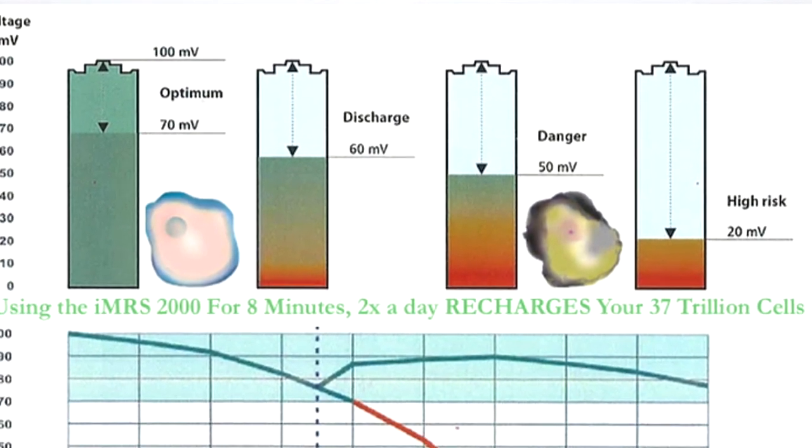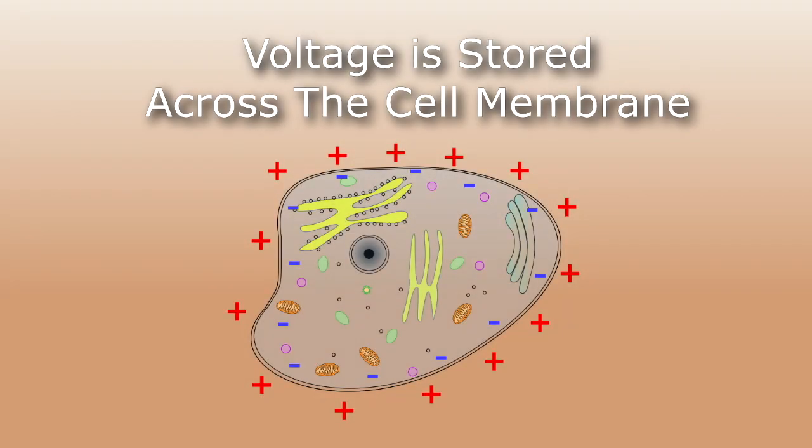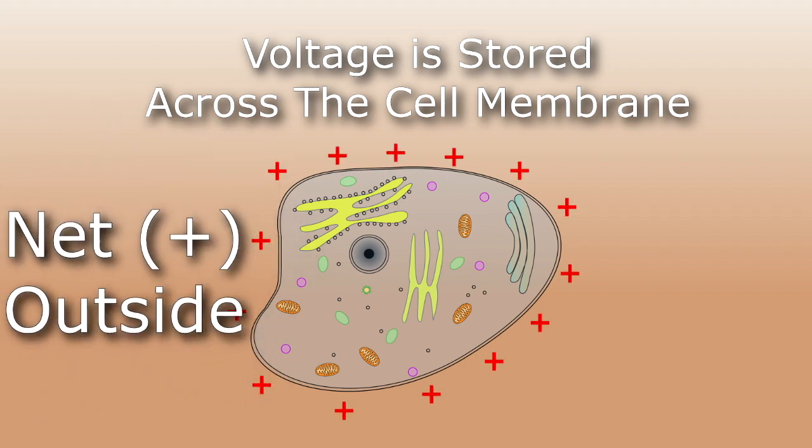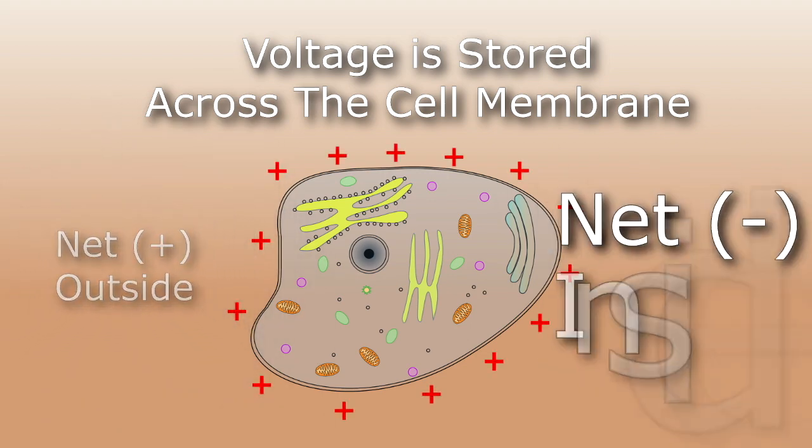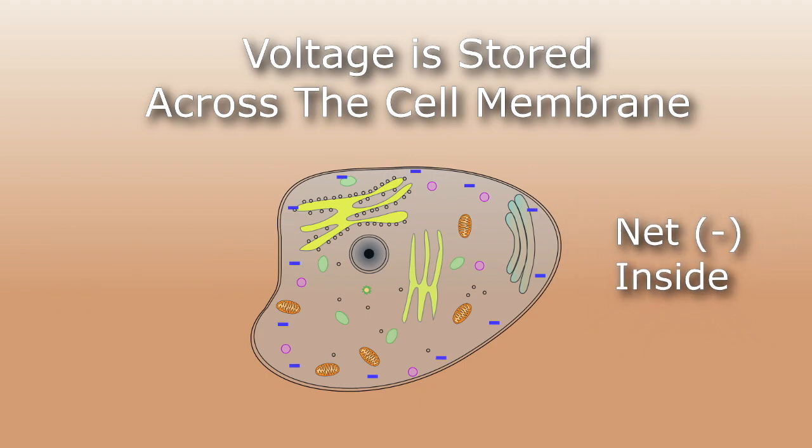And like we said, voltage is stored energy. So in the case of a cell, voltage is stored across the cell membrane of every cell that gives cells energy to do work. And this is due to the cells having a net positive charge on the outside of the cell and a net negative charge on the inside.